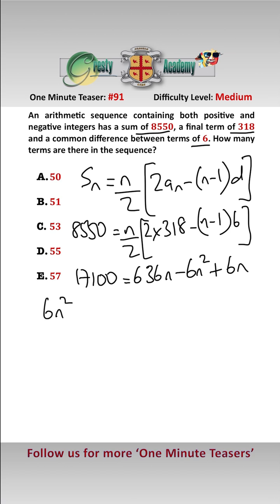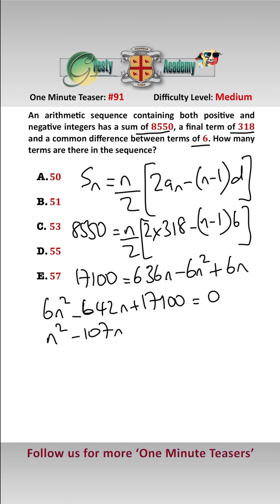Getting it even cleaner: 6n squared minus 642n plus 17100 equals 0. Divided by 6 gives us n squared minus 107n plus 2850 equals 0.